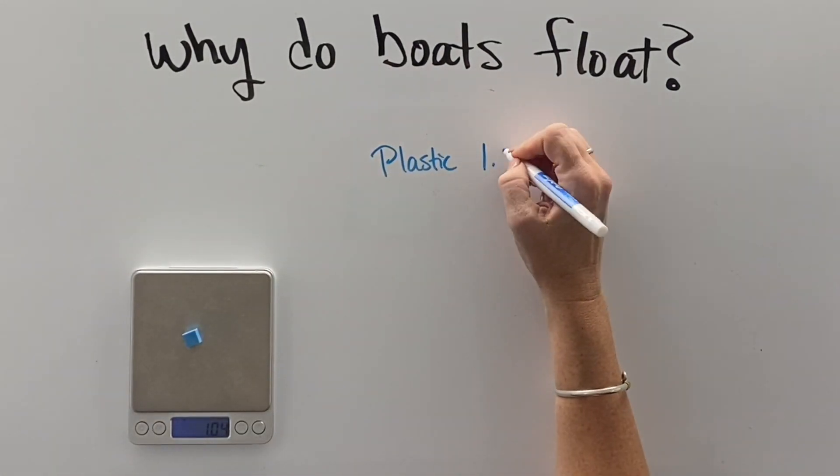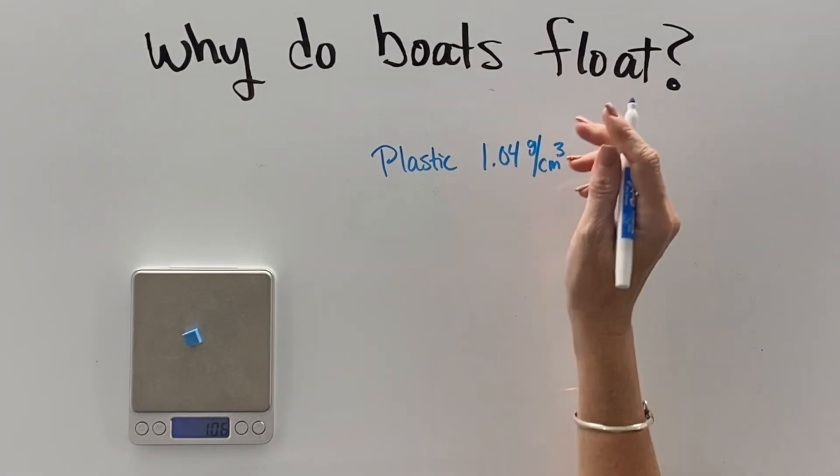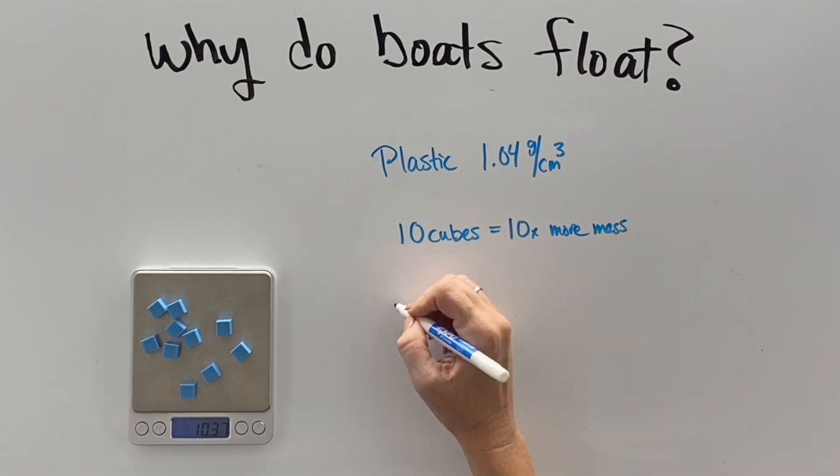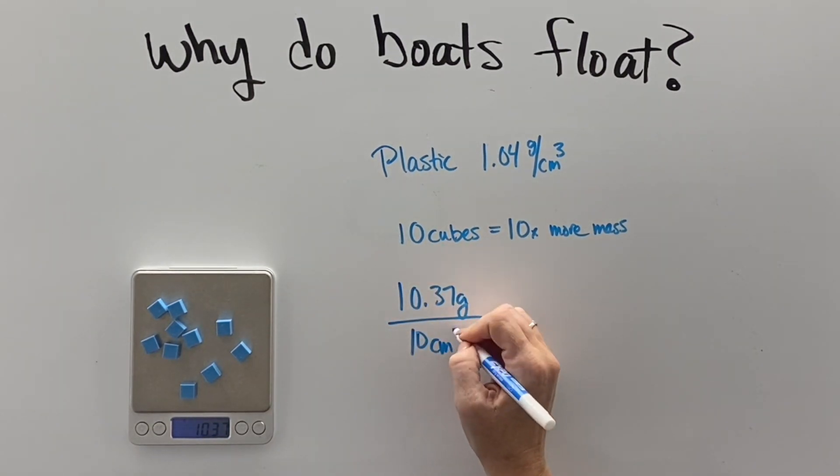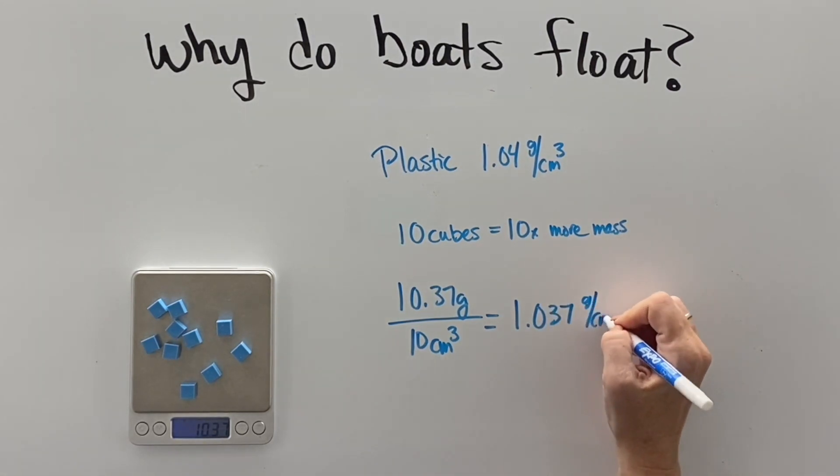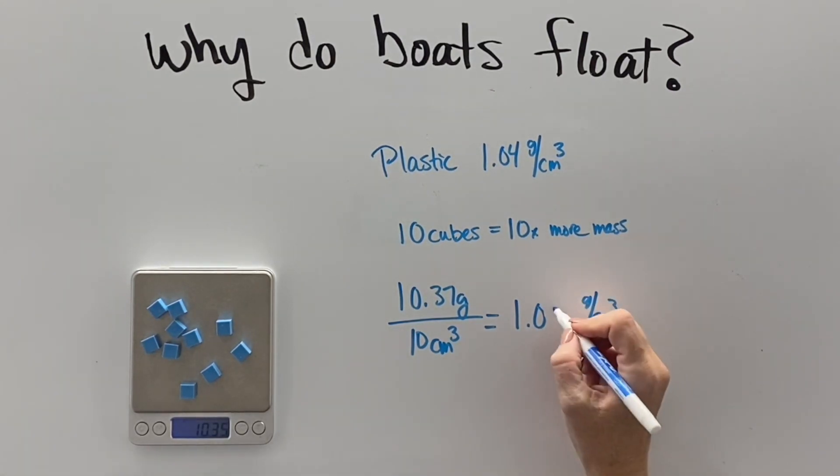To show you, I want to give you this example with some plastic. Here's a plastic piece. One cube has a density of 1.04 grams per cubic centimeter. Ten cubes has ten times more mass, but it still has the same density because it's proportional: ten times more mass, ten times more volume.